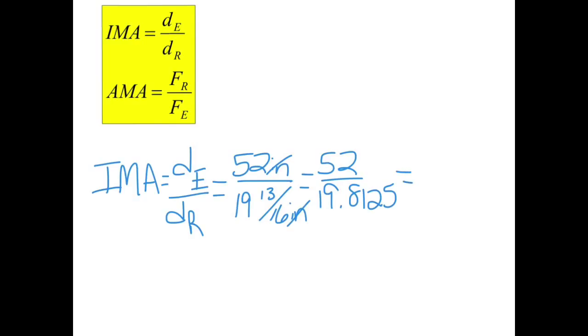I'm going to say 52 divided by 19.8125. I think it's easier to do the 13 divided by 16 to get my decimal, and then plug it all in like that. Alright, so 52 divided by 19.8125 is 2.6.